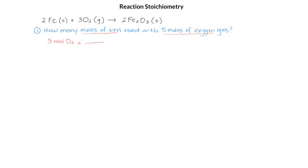Let's look at how many moles of iron react with moles of oxygen in the reaction. We know we have to have moles of oxygen in the denominator, and so according to our equation, 3 moles of O₂ react with 2 moles of iron. Remember that this unit factor is called the mole ratio, and it comes from your balanced equation.